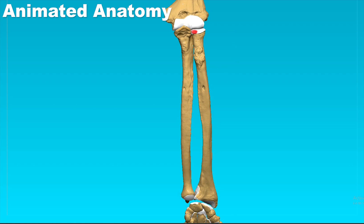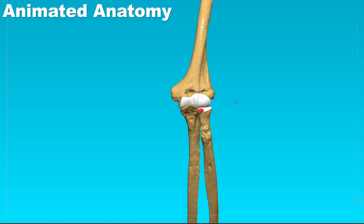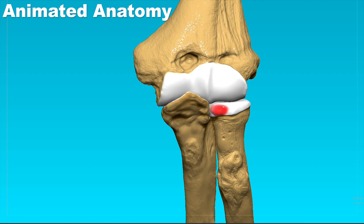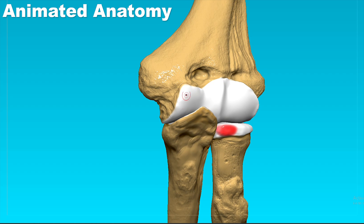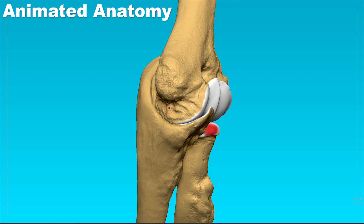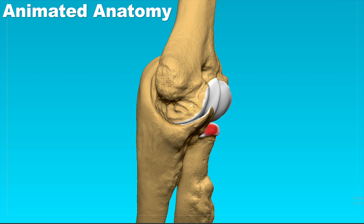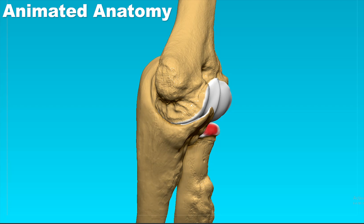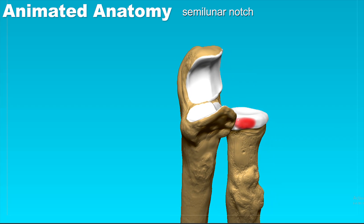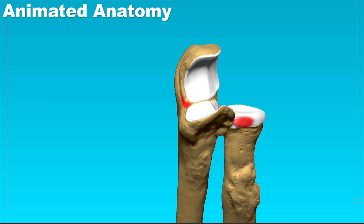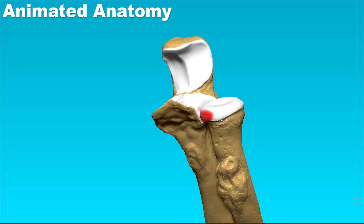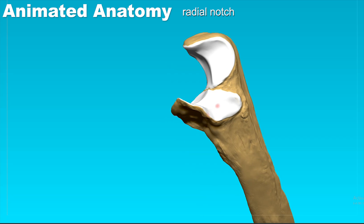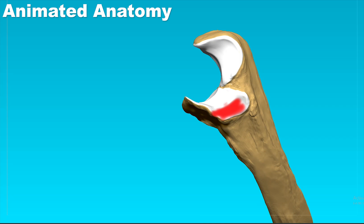Now let's get back to the upper portion of the ulna, which is close to the elbow. We can see here that the humerus is basically articulating with the ulna, and it does so by articulating in this semilunar notch. This is the semilunar notch, constricted here in the middle. The radius is articulating in the radial notch, and that's basically this articular surface here.